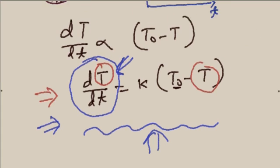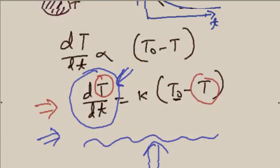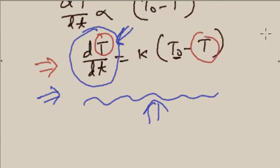Newton was interested in finding the exact function of this curve so that he could find T at any point in time. To get that function, this differential equation was required to be solved, and there are various methods by which you can solve a differential equation.